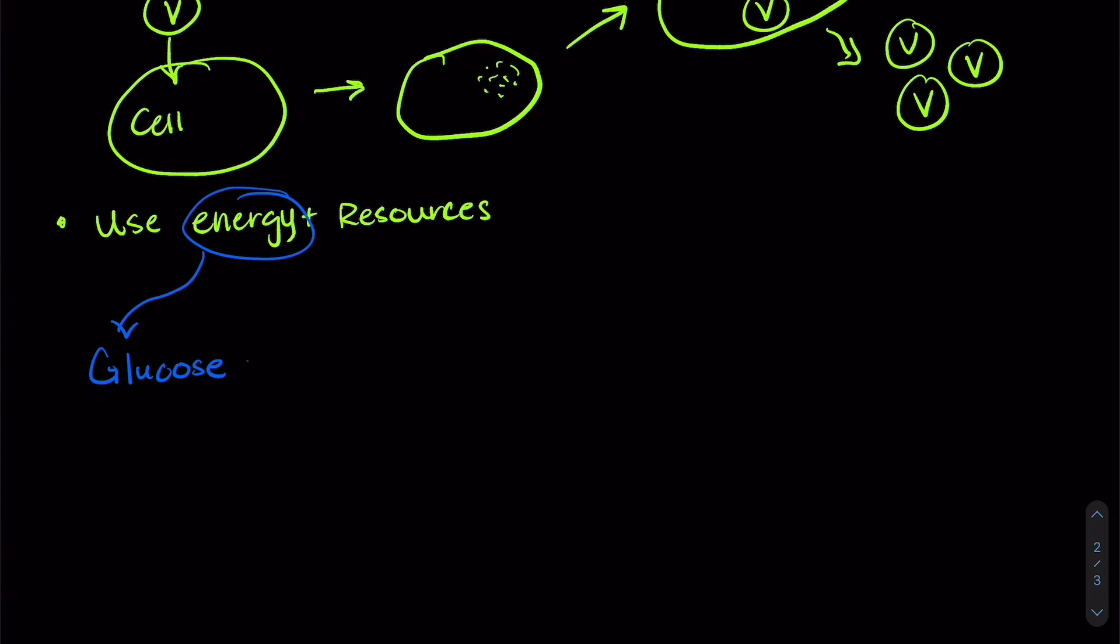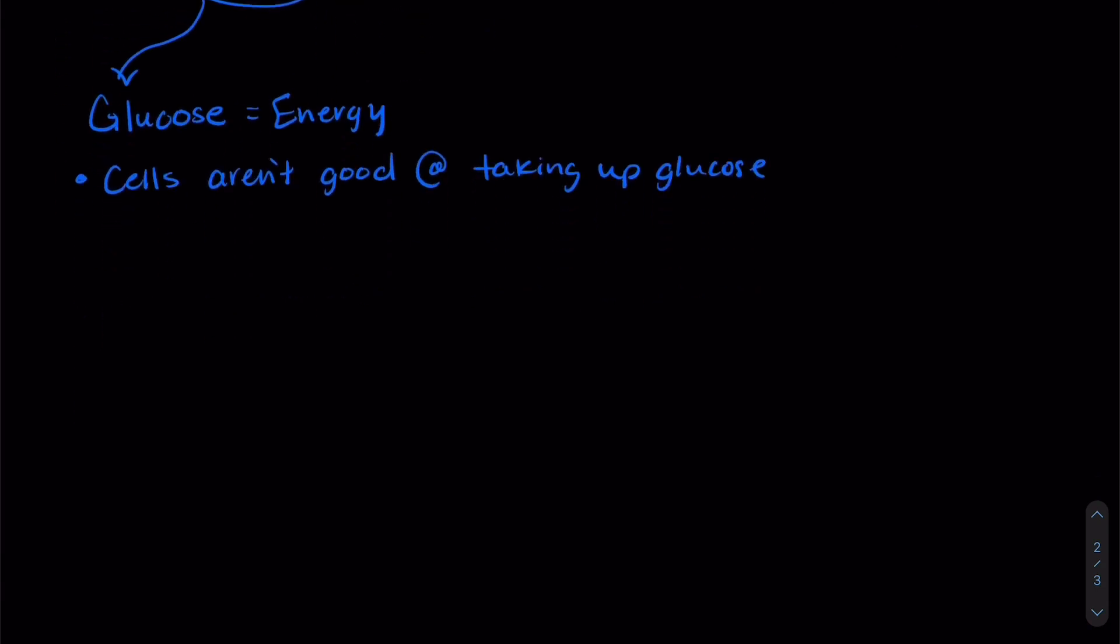Normally we eat our food, our digestive system breaks it down into the components including the sugars that are glucose, and it gets taken up into the bloodstream. And from the bloodstream, it gets into cells. But the problem is cells aren't very good at taking up glucose. They need some help. And so they get help from a protein called insulin.